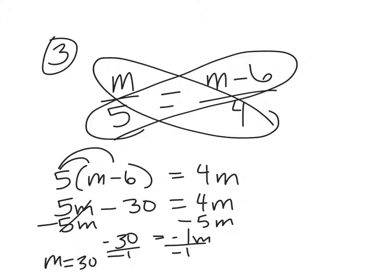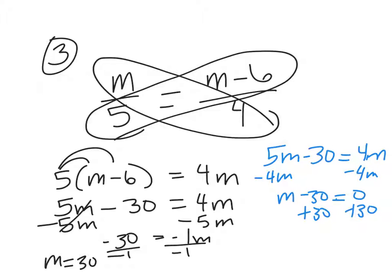So, let me do it in another color. So, I had 5m minus 30 equals 4m. So, just for fun, I'm going to subtract 4m here. So, I get m minus 30 equals 0. So, then I just plus 30. And I would get m equals 30. Whatever way your brain makes sense, I don't care. Both are correct. If you ever move everything all the way to one side of the equation, you just throw a zero over there so that way there's a placeholder. So, you can do it either way. Whichever way your brain is happy with.